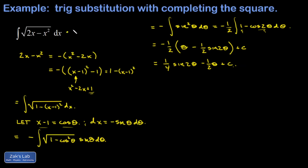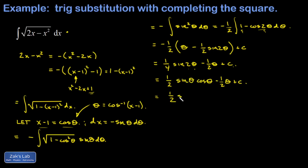We're not done yet because we had an x integral at the start and I need to express the final anti-derivative back in terms of x. To do that I solve for theta: theta is the inverse cosine of x minus 1. When I substitute back, the first term causes a problem because I have the sine of twice the angle whose cosine is x minus 1. That factor of 2 means we can't do this with a simple geometric construction, so I use the identity sine 2theta equals 2 sine theta cosine theta and cancel the factor of 2.